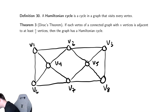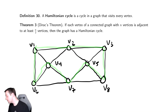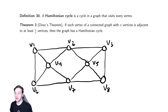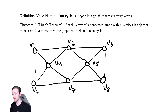This one looks pretty easy. I could go V1, 6, 4, 7, 5, 8, 3, 2, 1. We did it. We touched every vertex and never revisited an edge, which is one of the things required for it to be a proper cycle. We can't revisit edges or vertices.